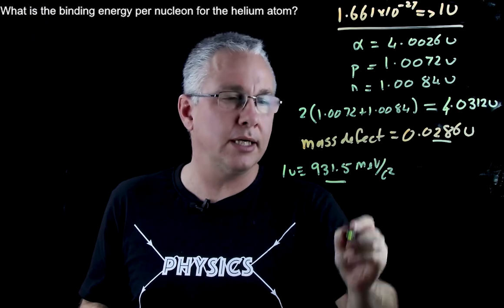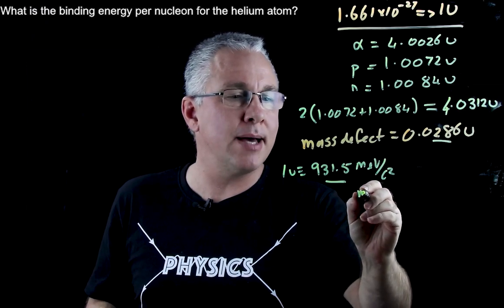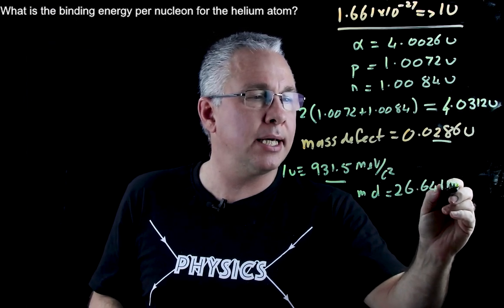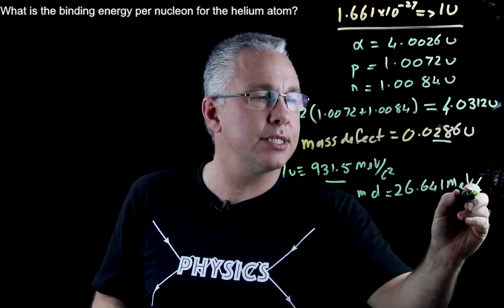this value here by this value here I'm going to get a value for the mass defect of 26.641 mega electron volts per c squared.